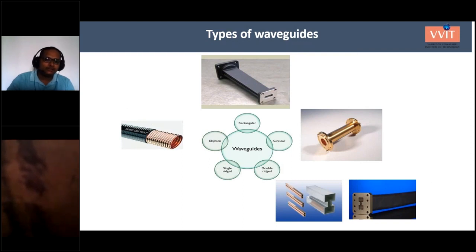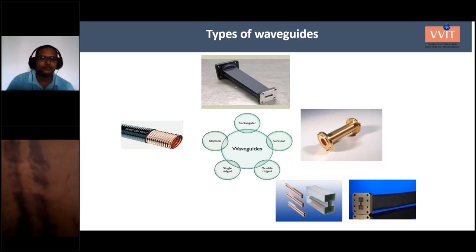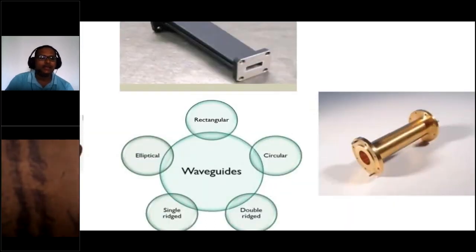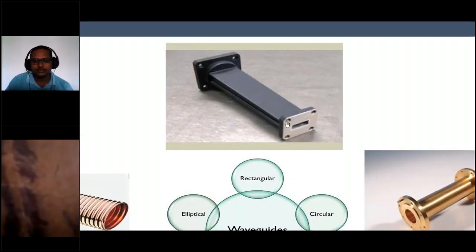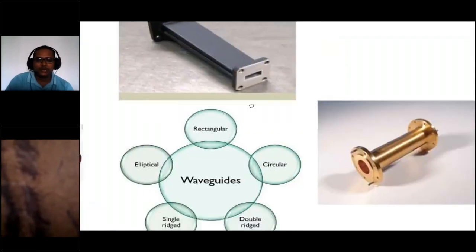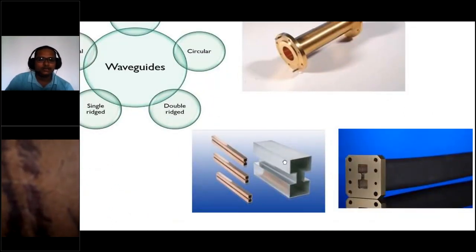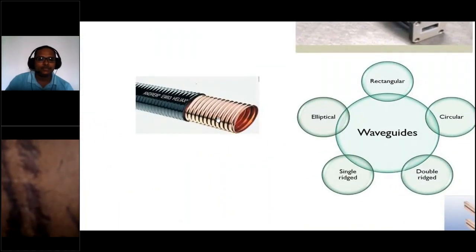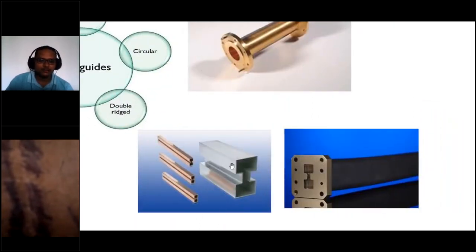Different kinds of waveguides include: rectangular waveguide with a flange for connecting waveguides together to form a longer guide, circular waveguide, elliptical waveguide, and single or double ridged waveguides which can be either rigid or flexible types.